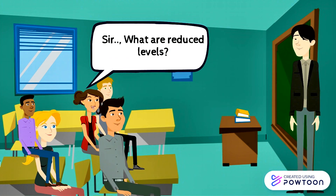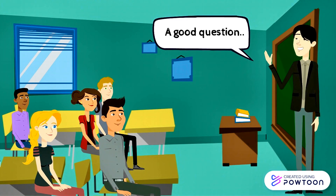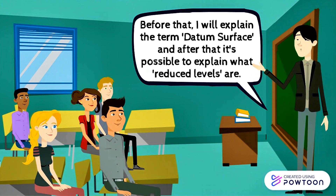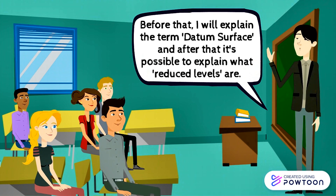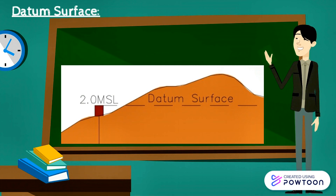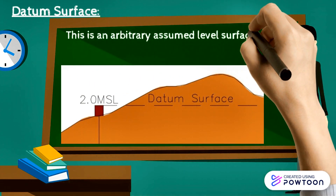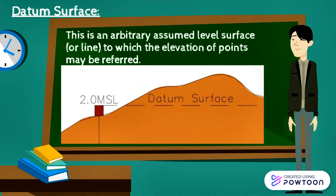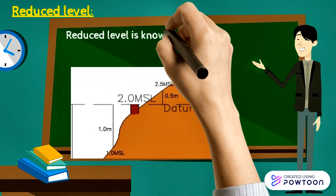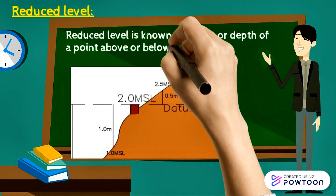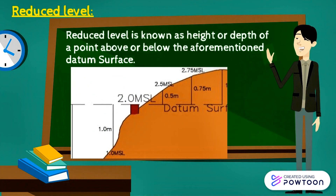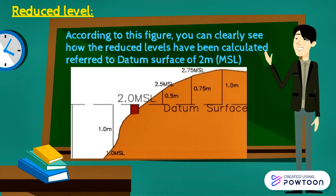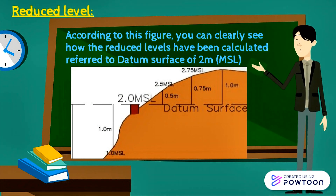What are reduced levels? Before that I will explain the term datum surface, and after that it's possible to explain what reduced levels are. A datum surface is an arbitrary assumed level surface to which the elevation of points may be referred. Reduced level is the height or depth of a point above or below the aforementioned datum surface. According to the figure, you can clearly see how the reduced levels have been calculated, referred to a datum surface of 2 meters from mean sea level.